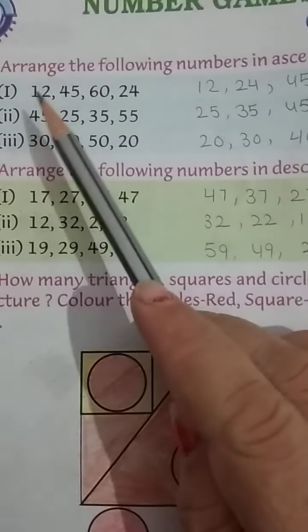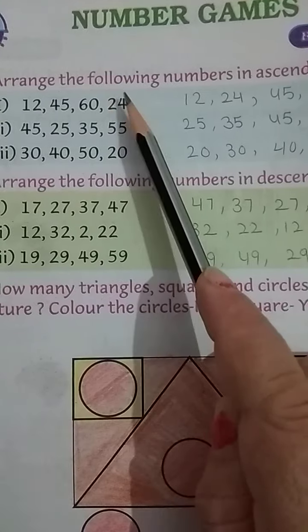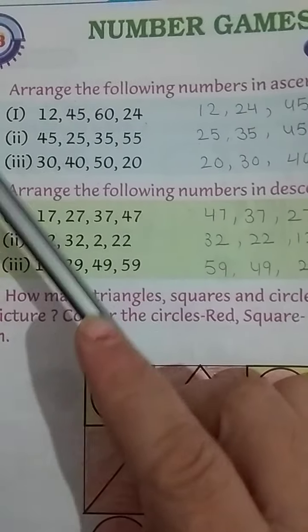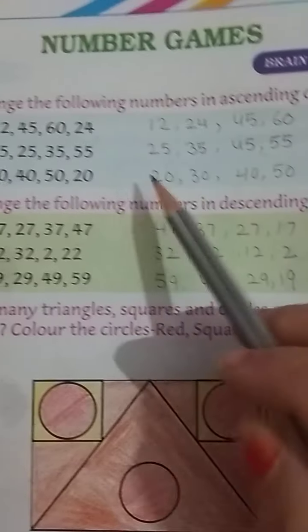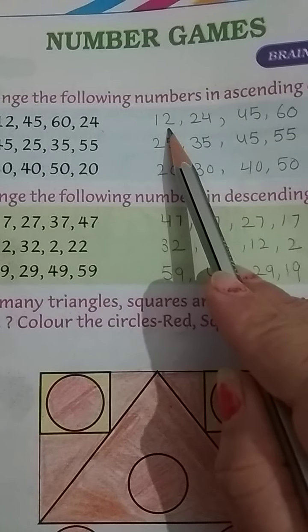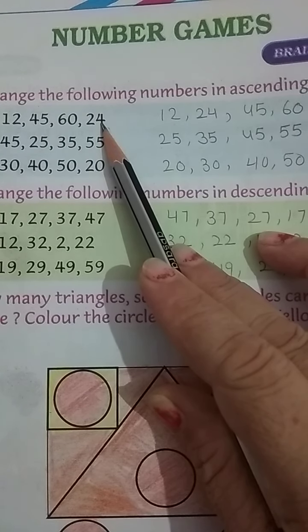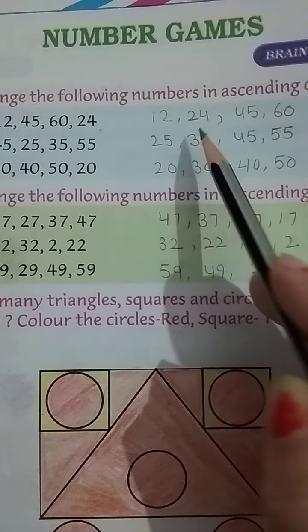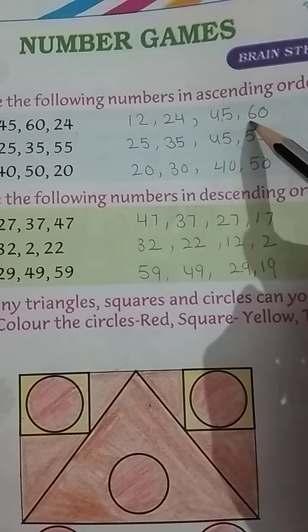Yahaan pe dekho. First 12, 45, 60 and 24. Yeh joh hai ascending order me nahi hai. Toh humnye in ko ascending order me karna hai. First ho ga ya 12. Phrir uske baad 12 se bada 24. 24 se biggest 45. 45 se biggest 60.